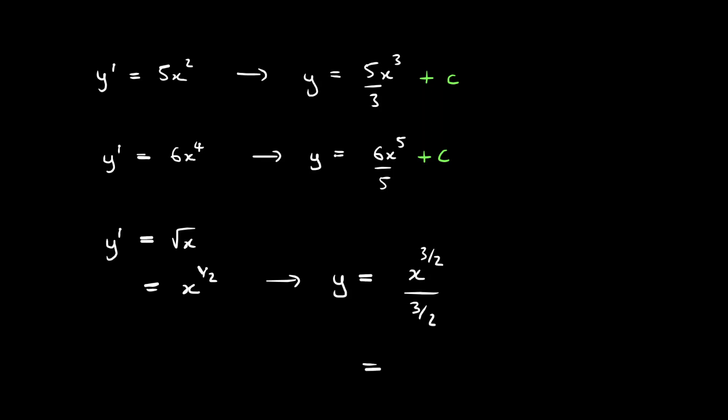And of course, dividing by 3 upon 2 is the same thing as multiplying by 2 thirds. So I get 2 thirds x to the power of 3 upon 2. And remember, what we've got to do is we've got to add a constant c.